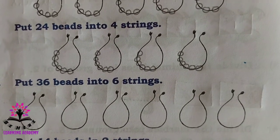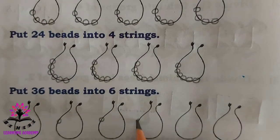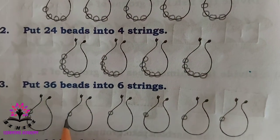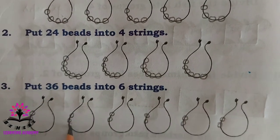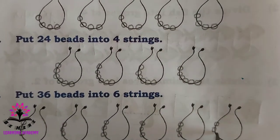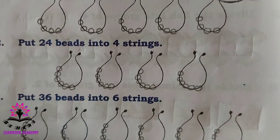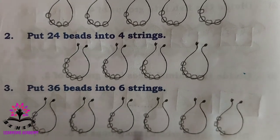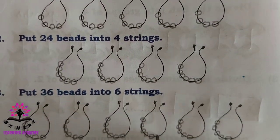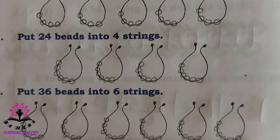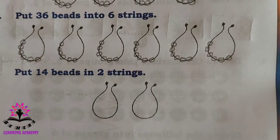Put thirty-six beads into six strings. Distributing one by one across the six strings — counting up to thirty-six. There are six beads in each string, and the total number of beads is thirty-six.